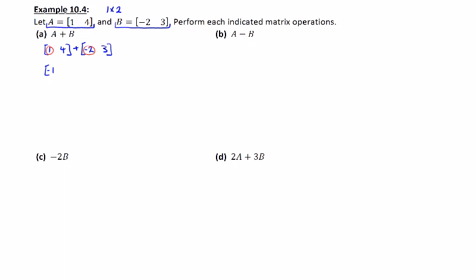And then we'll do the same thing with the next entry. So we have the first row, second column with 4 and 3. And if I add those together, I'll end up with 7. And so our result is another 1 by 2 matrix, same size as the two matrices we started with. But now the entries are negative 1 and 7.